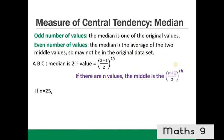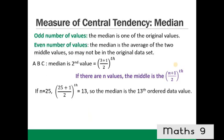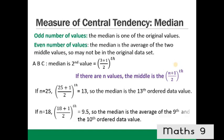For example, if n = 25, we find the (25 + 1) / 2 = 13th position, so the median is the 13th ordered data value. If n = 18, we do (18 + 1) / 2 = 9.5, so the median is the average of the 9th and 10th ordered data values.